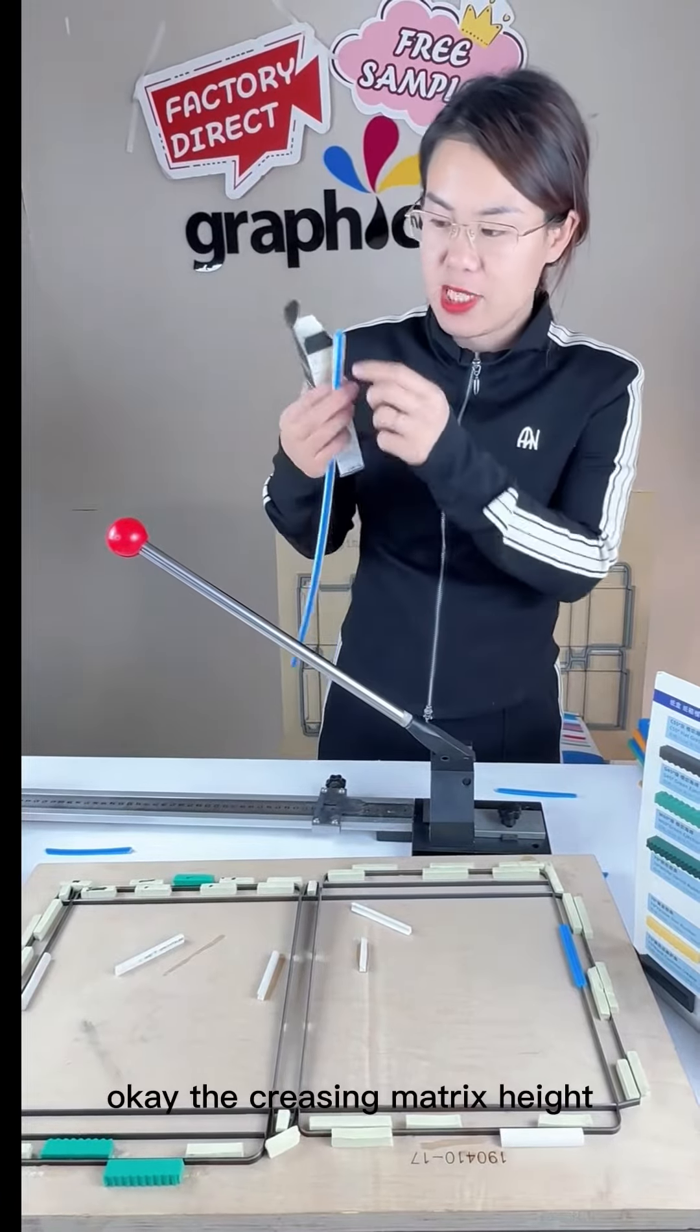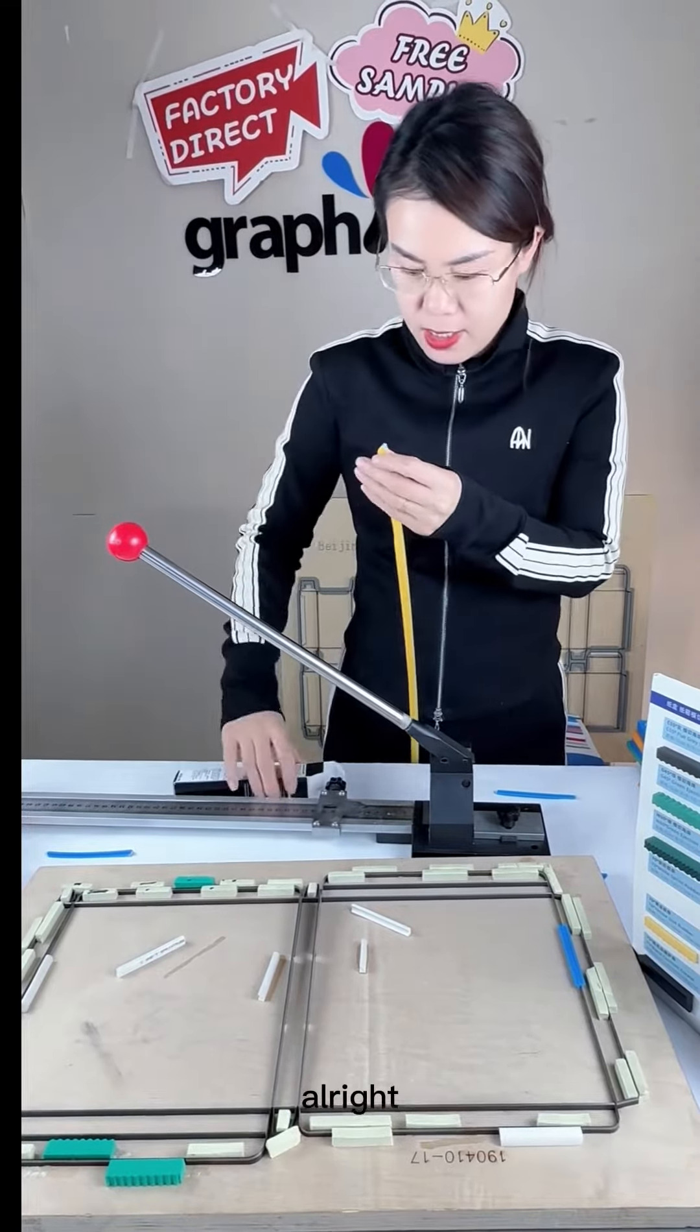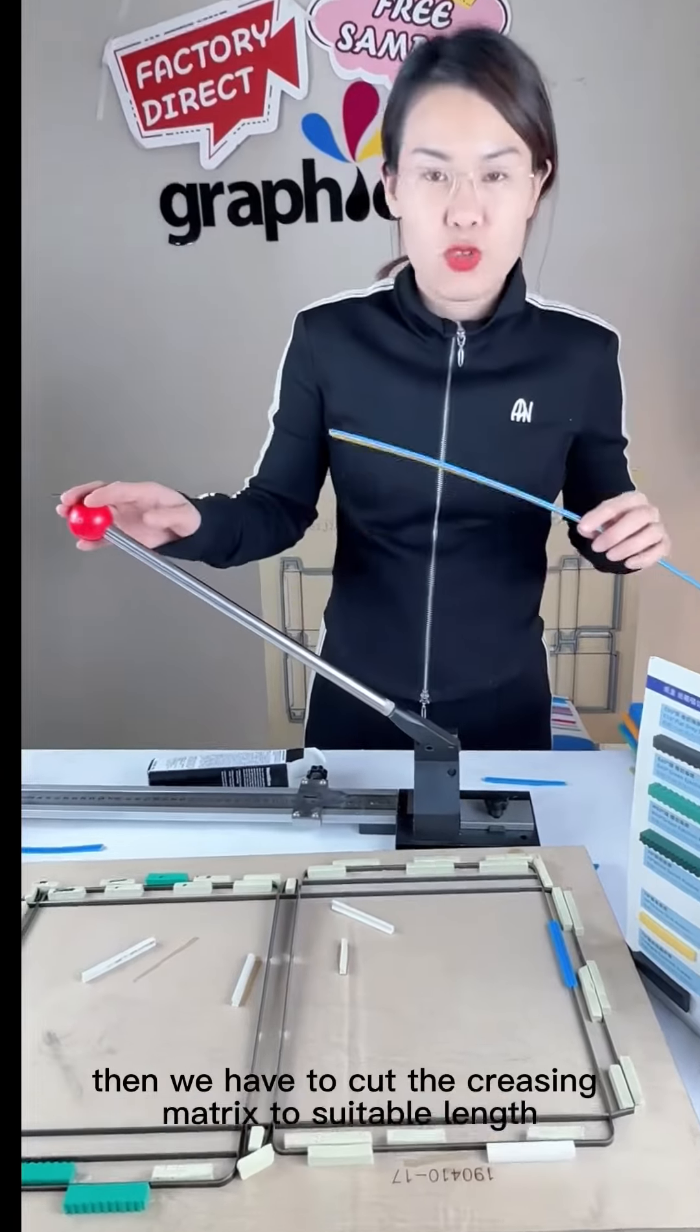The crazy matrix height is equal to the paper thickness. Then we have to cut the crazy matrix to suitable length.